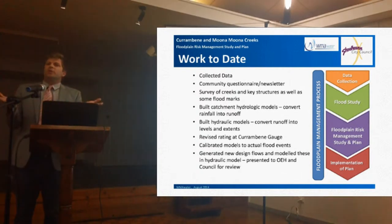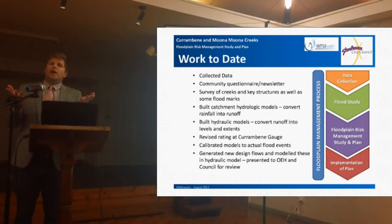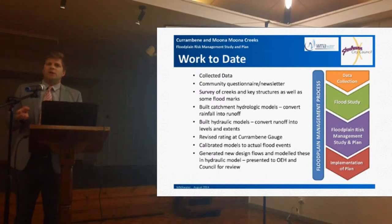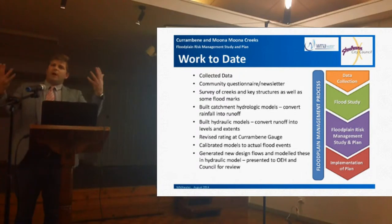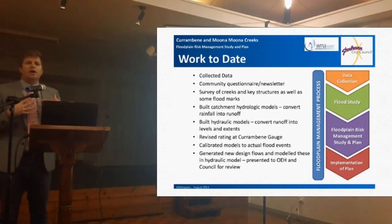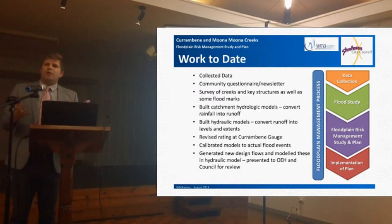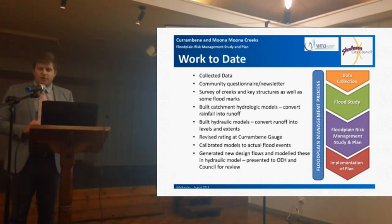We take those models we've built and try to establish they are accurate by seeing how well they can model an actual event that's occurred in the catchment. For example, we had the June 2013 event last year, and we got some flood levels from community consultation. We put that rainfall into our model and see how well our model can represent that — and in that way we assess the accuracy of the models we've built. Finally, we've gotten into design flows and established those design levels, which are currently in draft form.